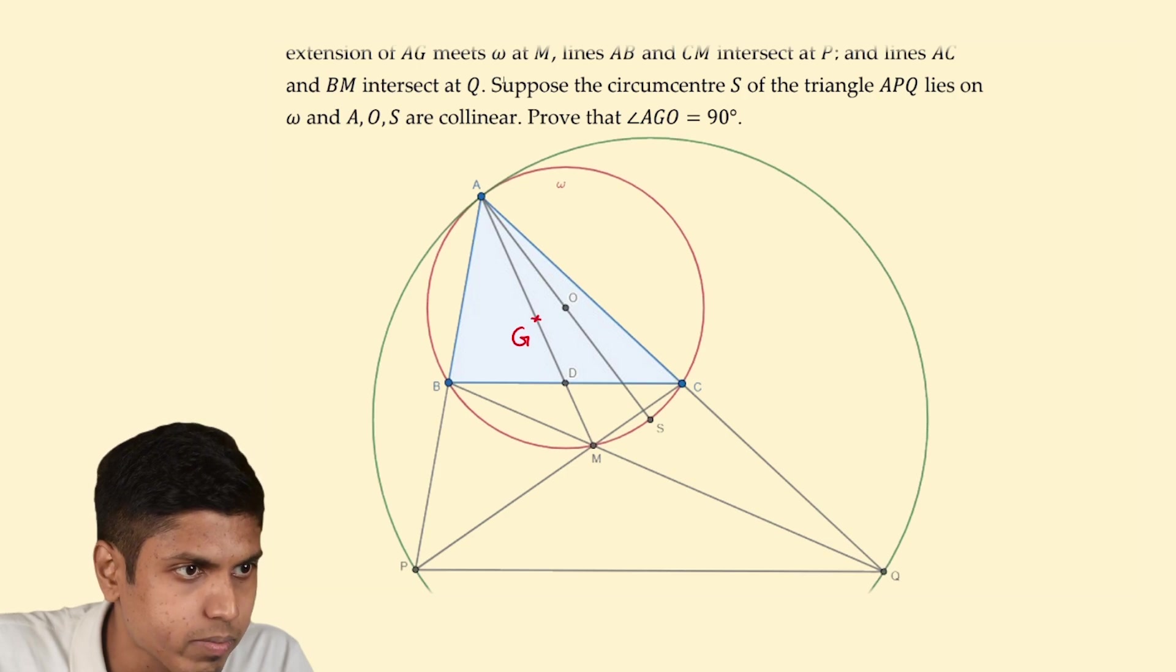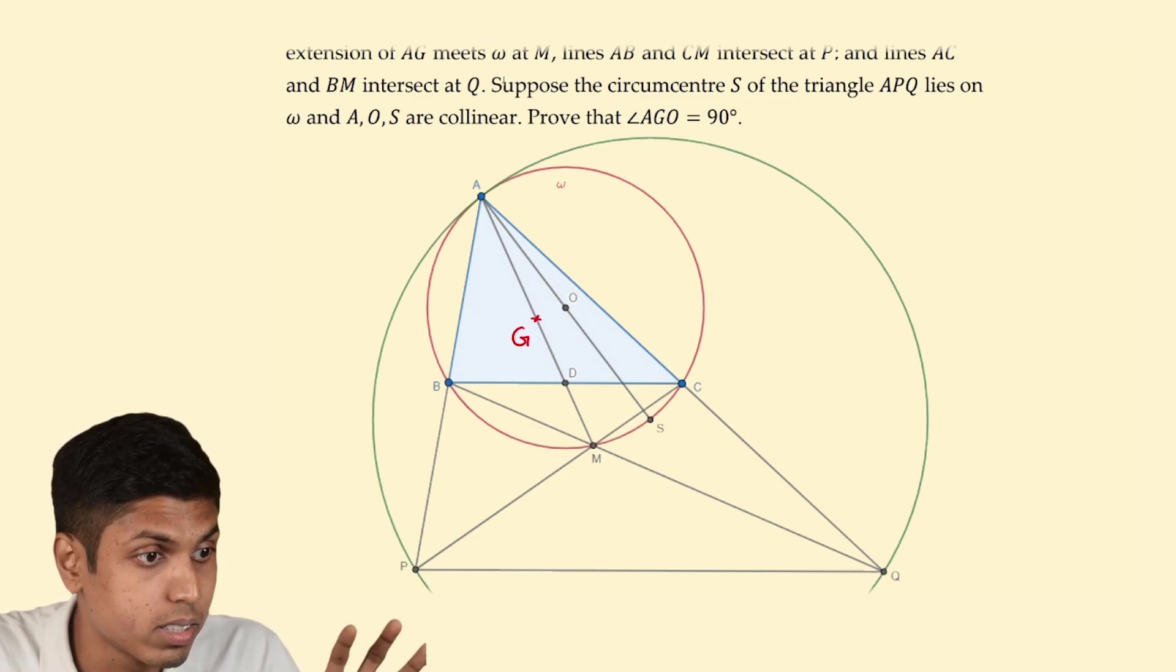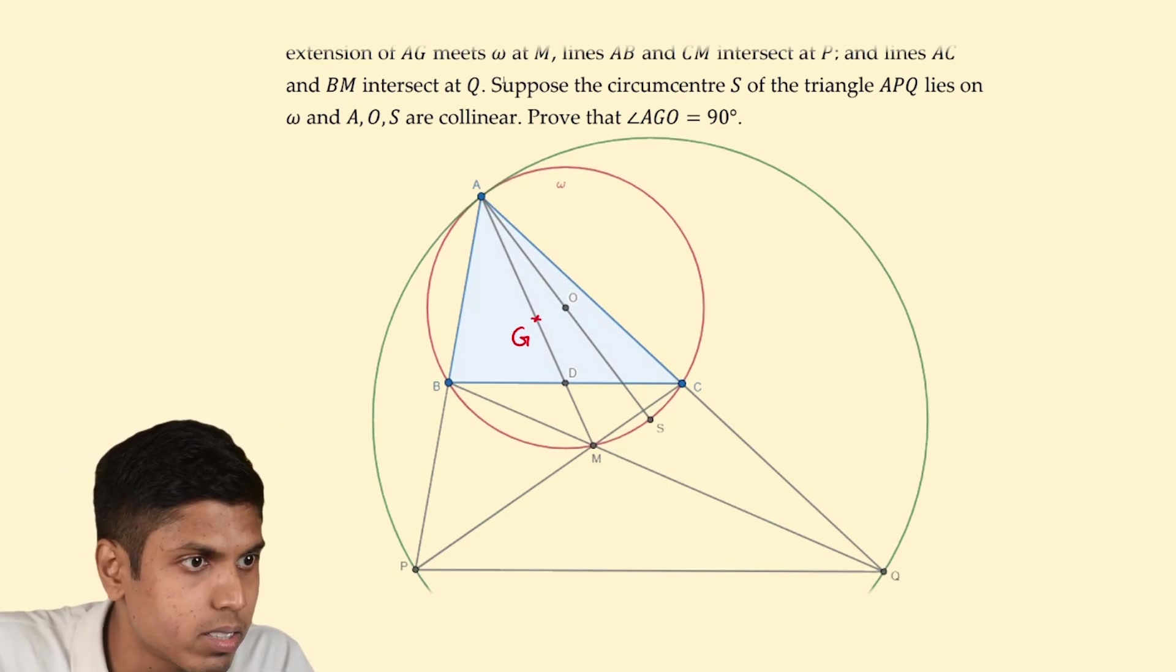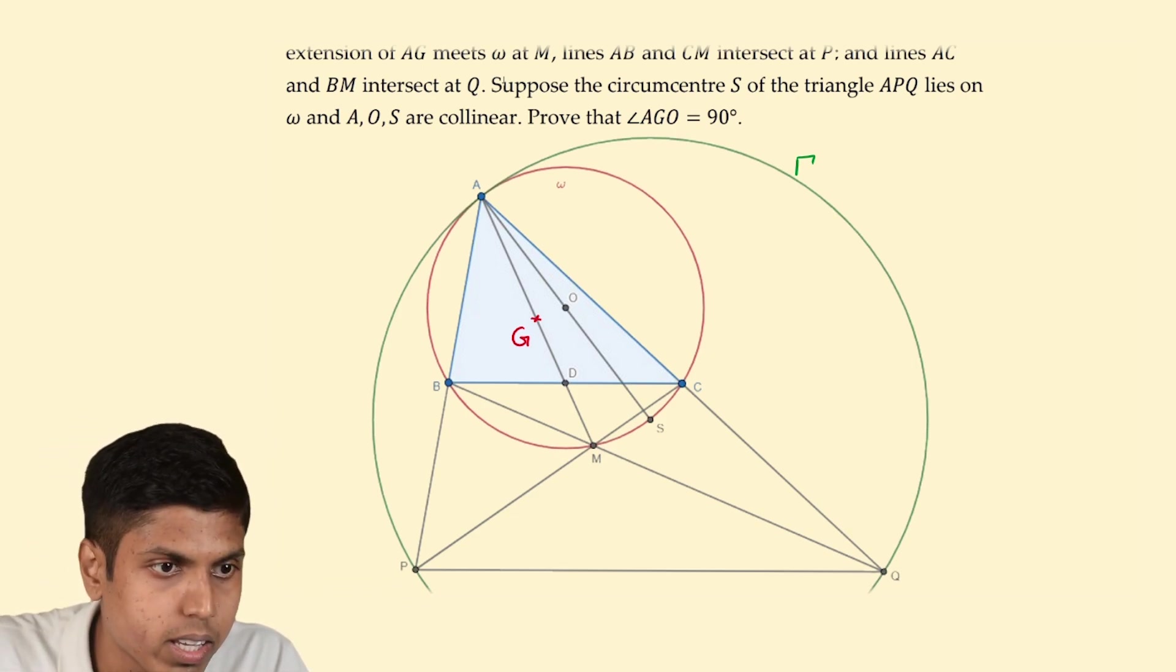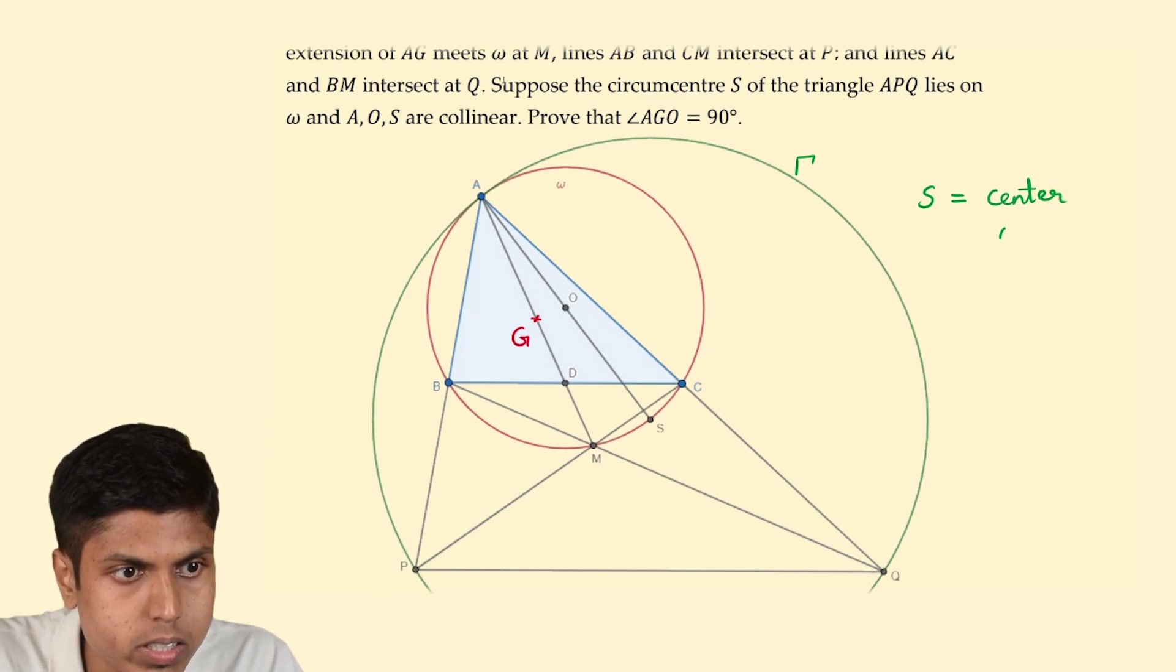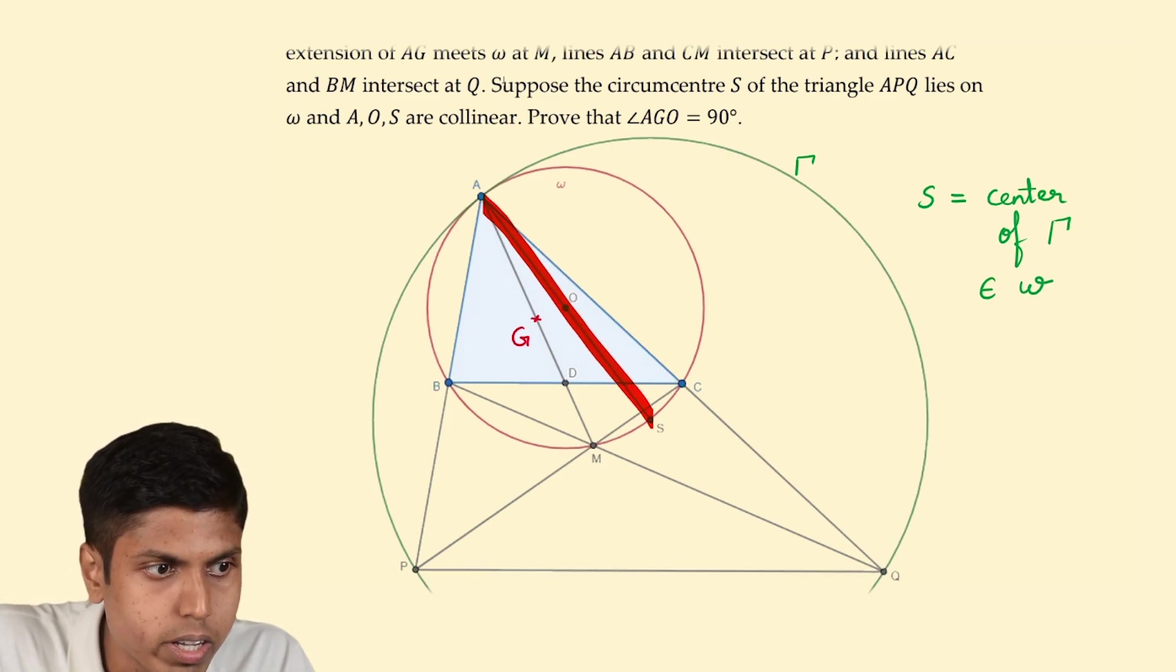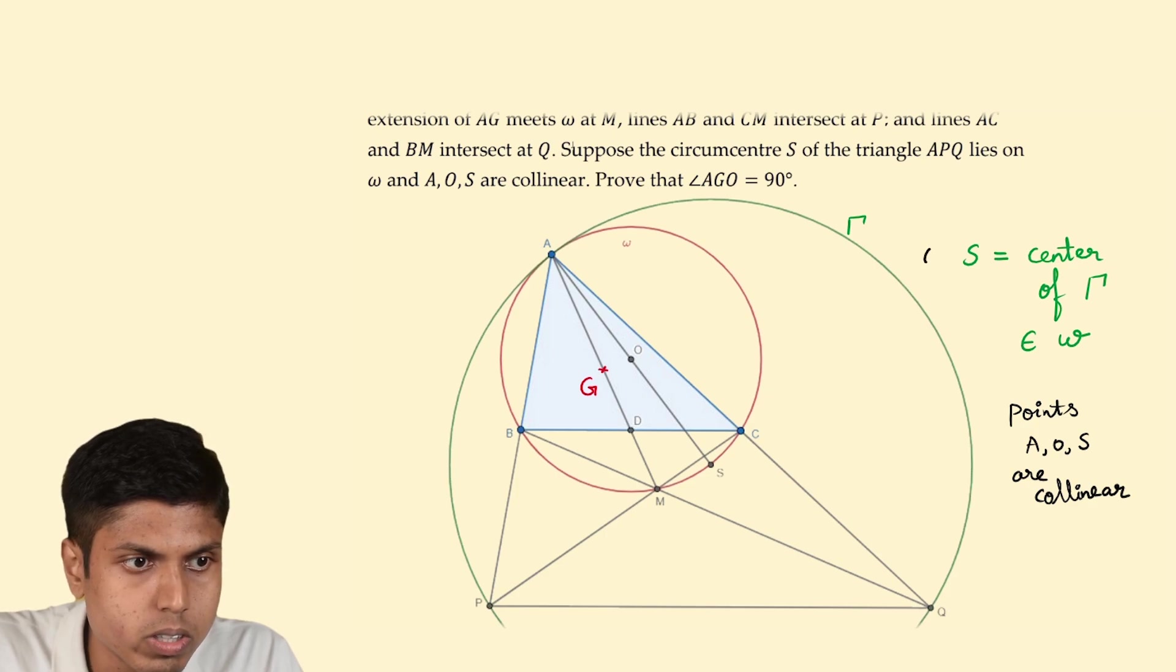The given conditions are the following. First, the center of the circumcircle of triangle APQ lies on the circle omega. So let's name the circumcircle of APQ as gamma. The center of gamma lies on omega and we label it as point S. The second given condition is that points A, O, S are collinear where O is the center of omega.